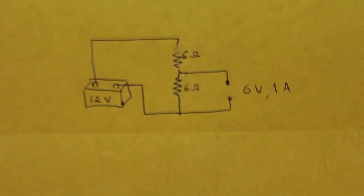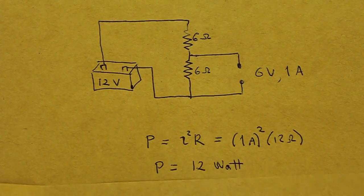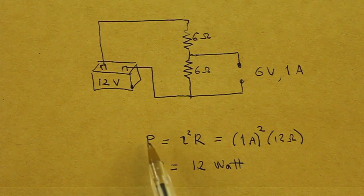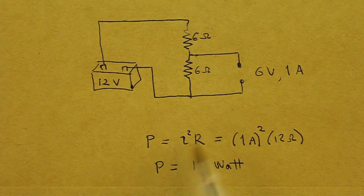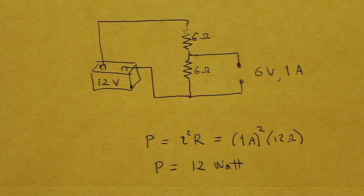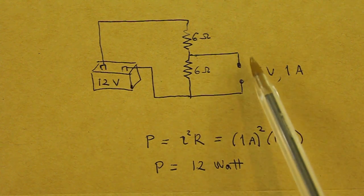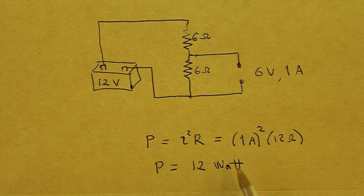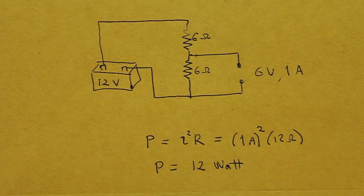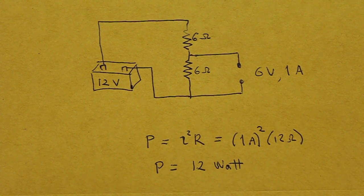However, when you look at the power dissipated by this circuit, we can see, using the power formula, current squared times resistance, that the power is 12 watts. This is the power that we are wasting even without connecting any load to the circuit. 12 watts dissipated only by our resistors. So for this reason, voltage dividers are not used for power applications. There are more efficient ways of reducing the voltage.